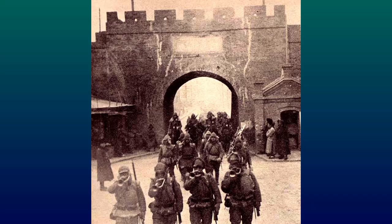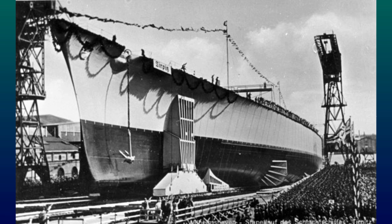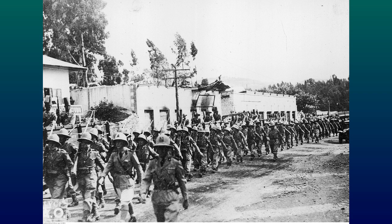In 1931, the Empire of Japan invaded Manchuria. In 1935, Britain signed the Anglo-German Naval Agreement, allowing Germany to rebuild its navy beyond the terms agreed to in the Treaty of Versailles.